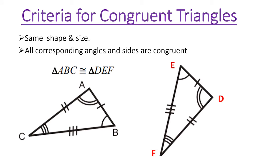The criteria for congruent triangles: they must have the same shape and size, and all corresponding angles and sides must be congruent. Looking at the congruency statement 'triangle ABC is congruent to triangle DEF,' side AB should be congruent to side DE. Side AB has one congruence mark and side DE has that same congruence mark, so those are congruent.